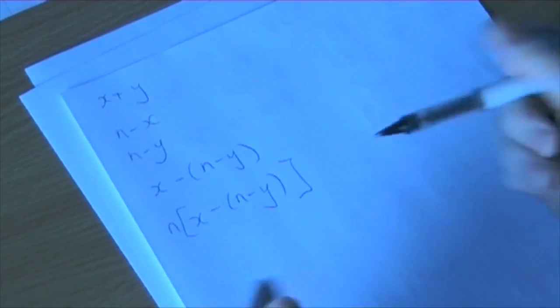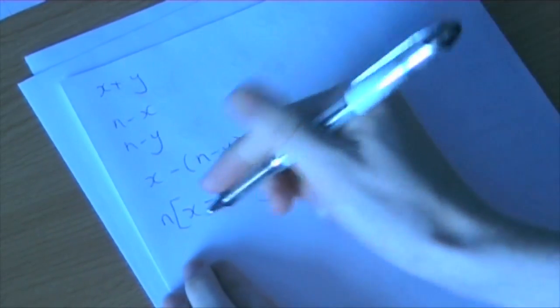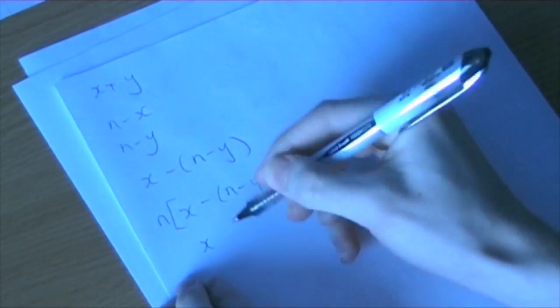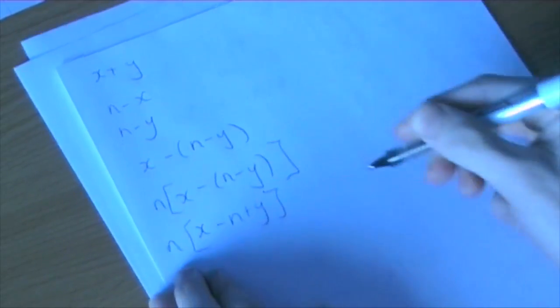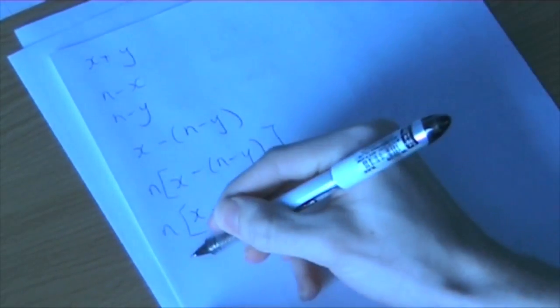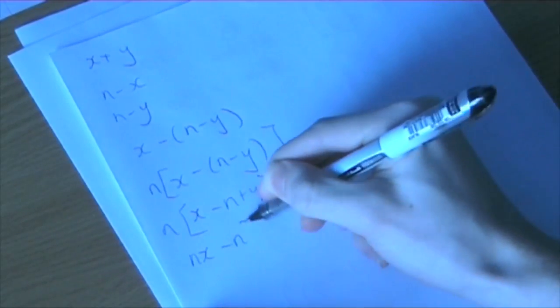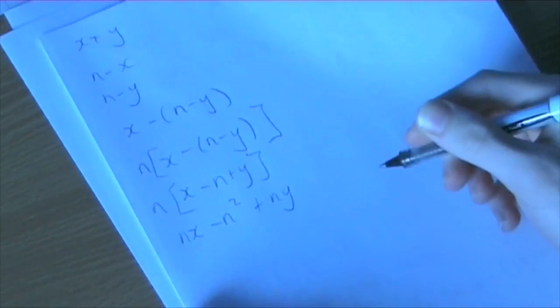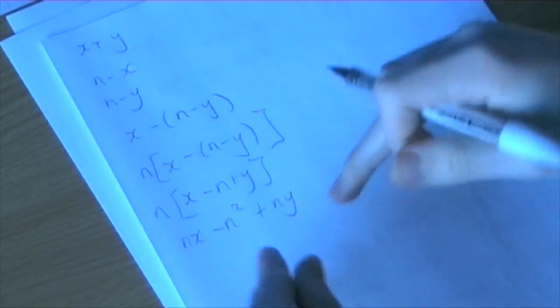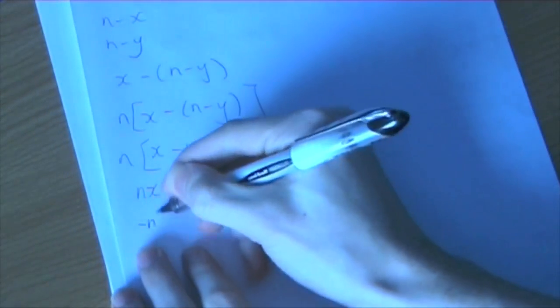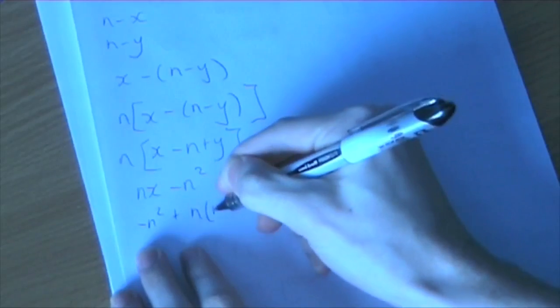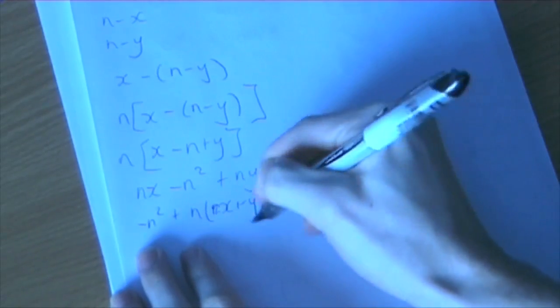So if we were to expand all of this, first just get rid of these brackets in the middle. We get x minus n plus y, all multiplied by n. And that would get us nx minus n squared plus ny. And we can rearrange this and factorize it to get minus n squared plus n times (x plus y).